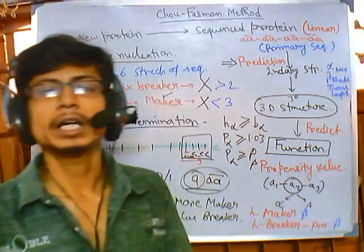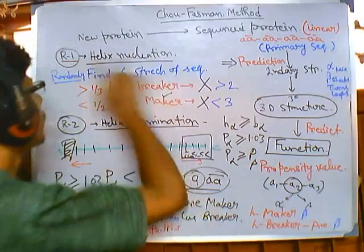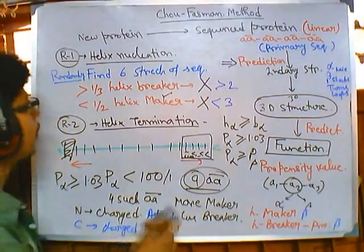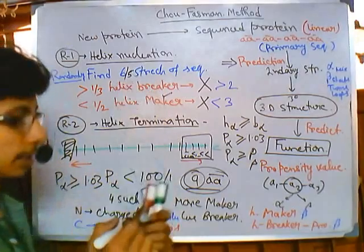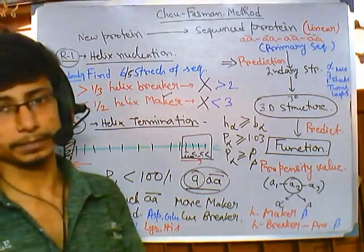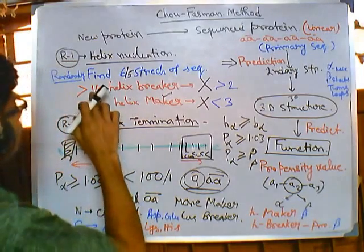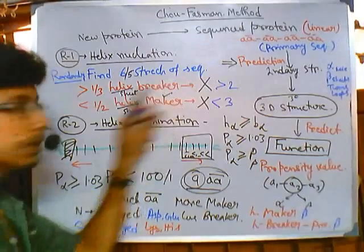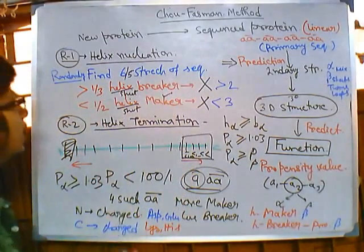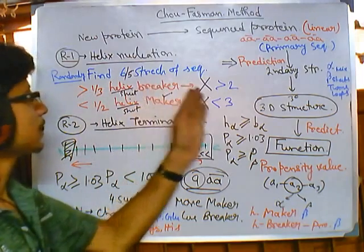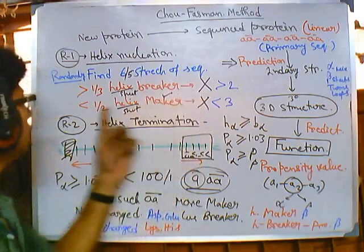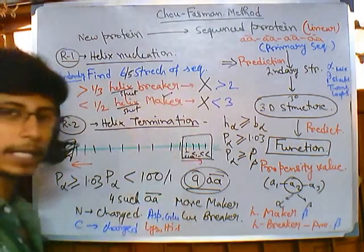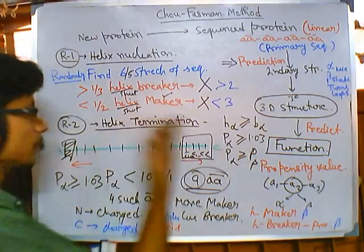For beta sheet prediction using Chou-Fasman method, the process is similar but with differences. Instead of a six-residue window, we use five residues. We look for beta sheet makers and breakers: if there is greater than one third of beta sheet breakers, it will not form a beta sheet; if less than half beta sheet makers are present, it also won't form. So there must be less than one third of beta sheet breakers and greater than half of beta sheet makers among the five residues.